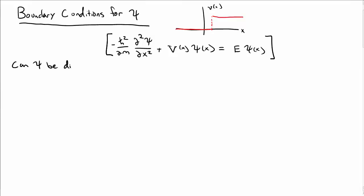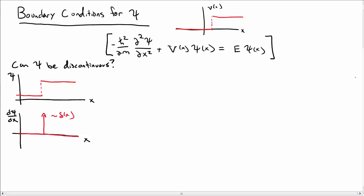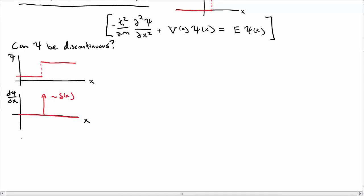It has to satisfy Schrödinger's equation. Can psi be discontinuous? Will that still solve the Schrödinger equation? If we have psi which looks like maybe some kind of step function here, let's consider taking the derivative of that — d psi dx. The slope is zero over here, the slope is zero there, and the slope is infinite at the discontinuity. In fact, we get a delta function for the derivative of psi.